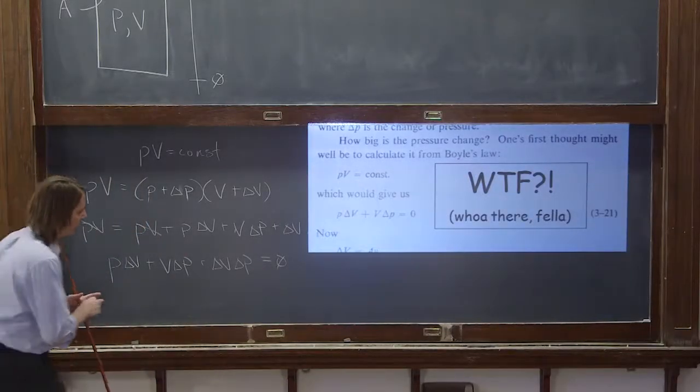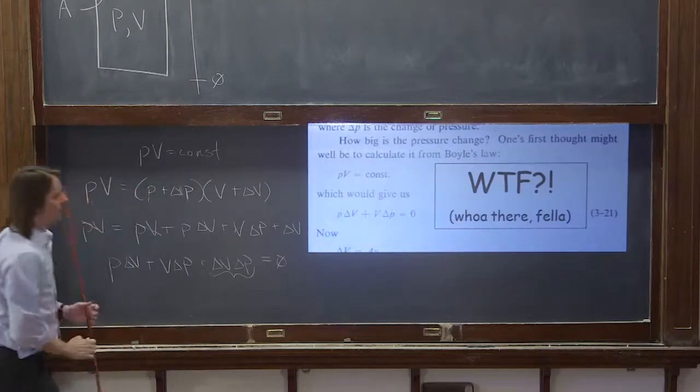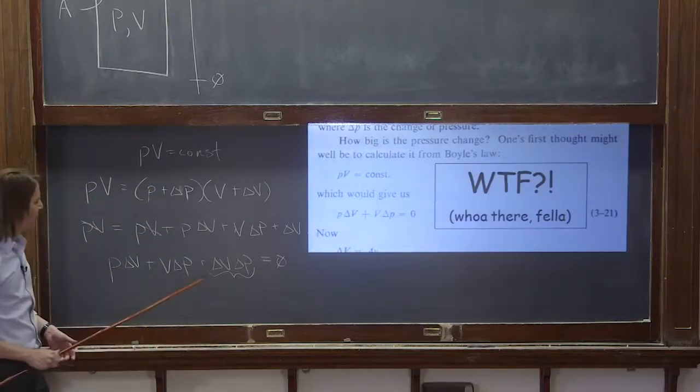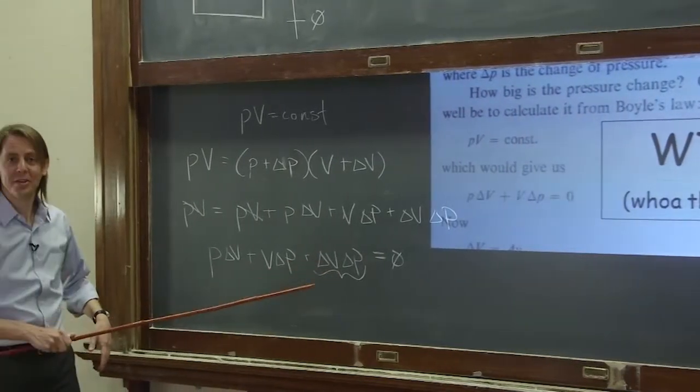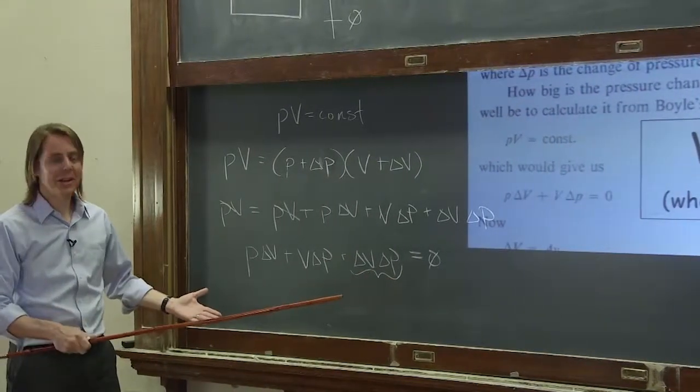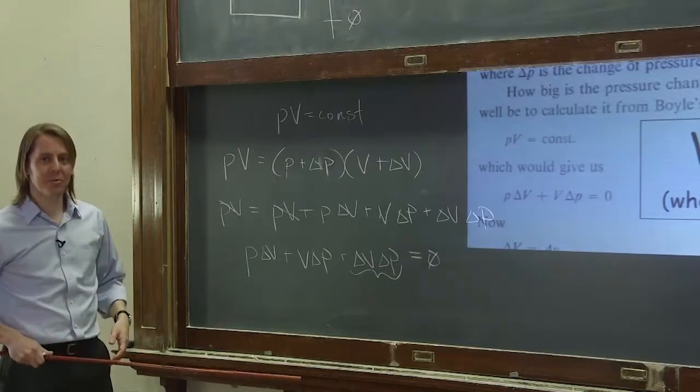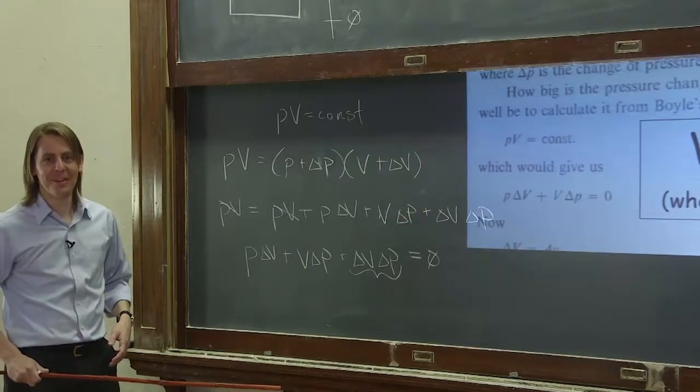He basically threw out this term. He's got P delta V and V delta P and just said, well, that's small, don't worry about that. And that's actually where he linearized it. As he moves forward, this thing is linear because that term was thrown out. He didn't exactly tell you to throw that term out, did he?